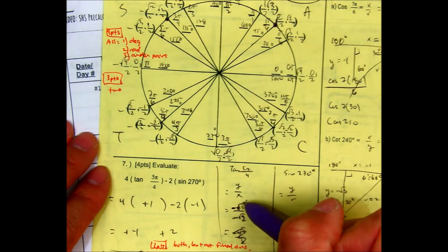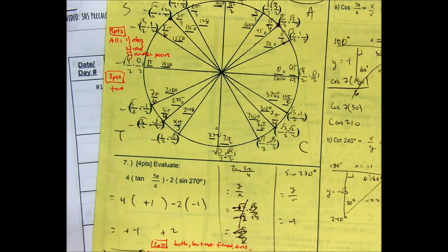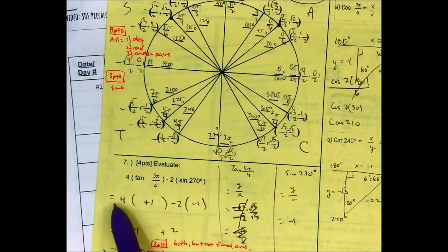And the same expression of yourself. So be careful here. When you cancel, it's actually equal to 1. So tangent of 5 pi over 4 is 1. And then 4 times 1 is 4.